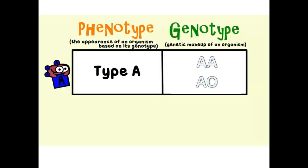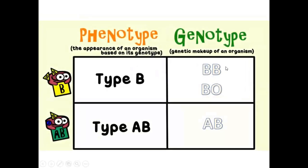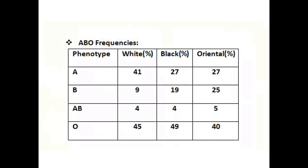To summarize: type A individuals inherit homozygous A,A or heterozygous A,O; type B inherit homozygous B,B or heterozygous B,O; AB individuals inherit both A and B genes; and type O must be homozygous O,O since they don't have any antigens on the surface of the red blood cell membrane. Note the frequencies of each phenotype — group A is common in Blacks, group B is common in Orientals, and O is the most common across all races.